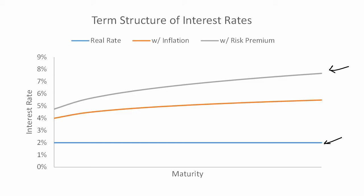Once we have the term structure of real rates, we need to adjust for inflation. Remember that inflation erodes our real purchasing power. So this gap right here — that's our real rate of return, that term structure. On top of that, we add an inflation premium, which is the gap between the blue line and the orange line.